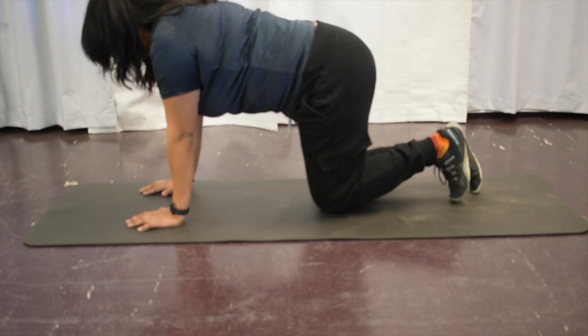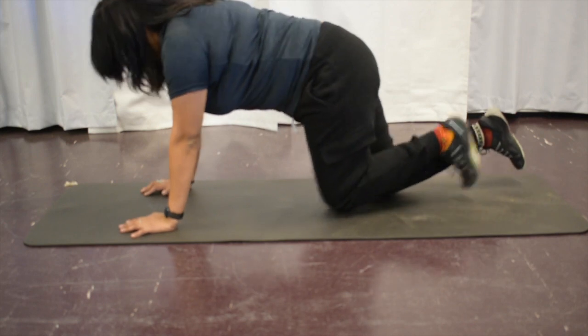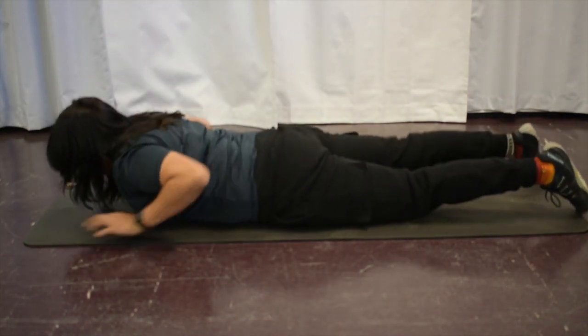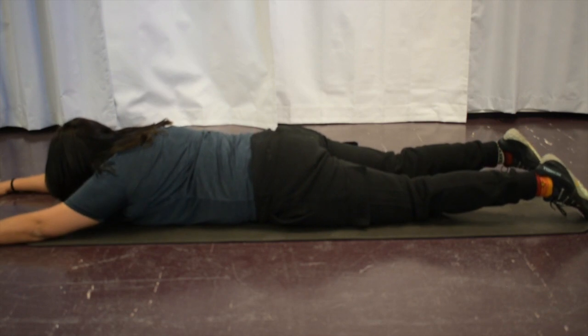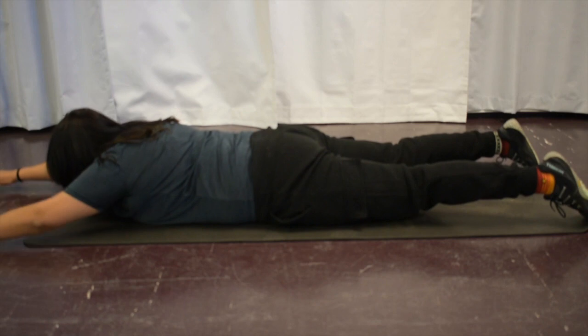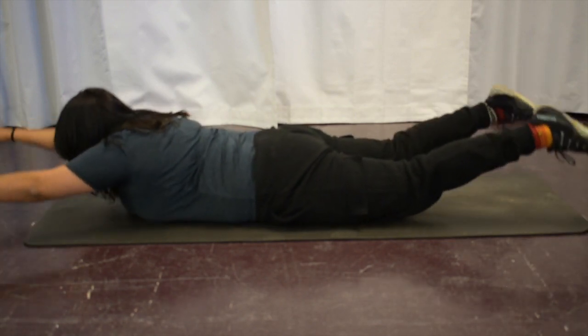The next exercise, we're going to be doing supermans. So we're going to come down to the floor. Take your time. And we are going to be lifting our arms and legs. Again, contracting our core, bringing our belly button into our spine. And we're going to go slow. Three sets of eight.